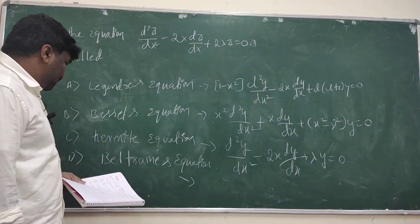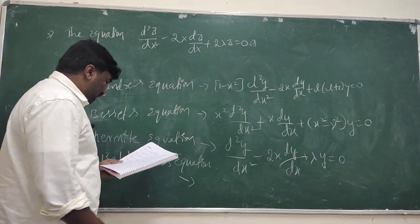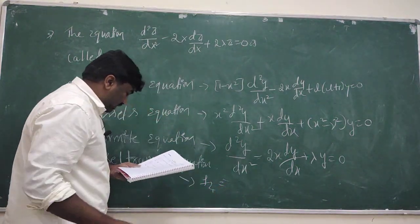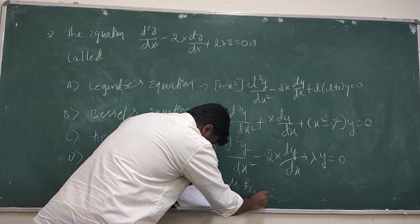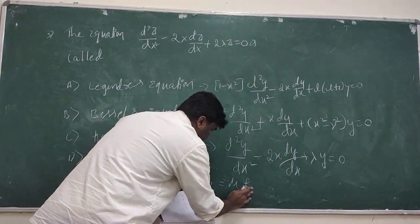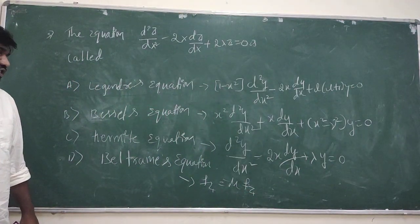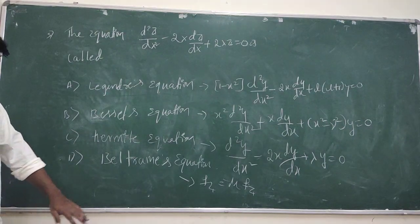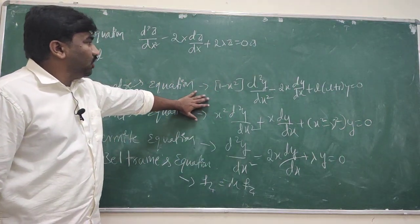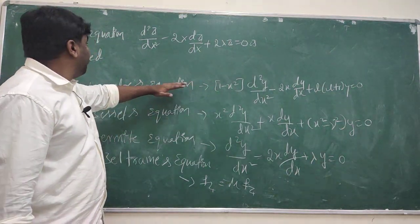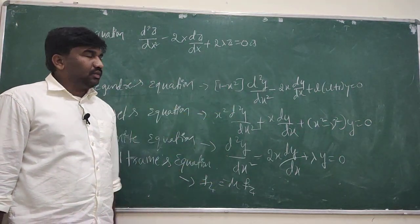The Beltramian equation, f(z) = μ·f(z), is used in complex analysis. So it is clearly different. The given equation is the Hermite equation, which is very useful in quantum mechanics. Always remember this equation for exams.